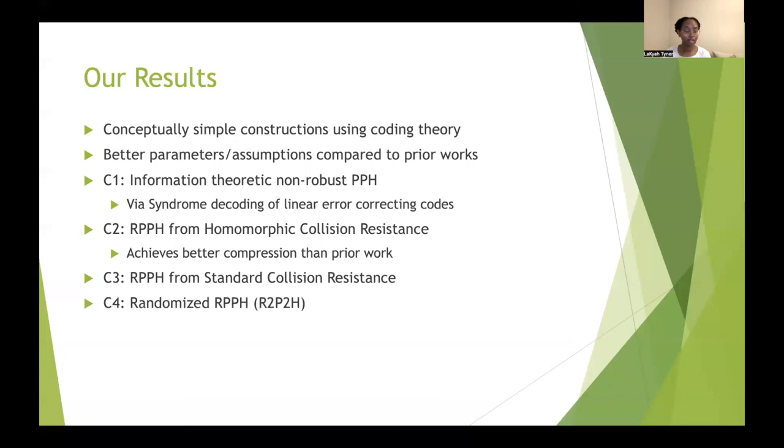And finally, with our last construction, we study a new notion of randomized robust property-preserving hashing for Hamming, and we're able to provide an information-theoretic construction that achieves optimal parameters.